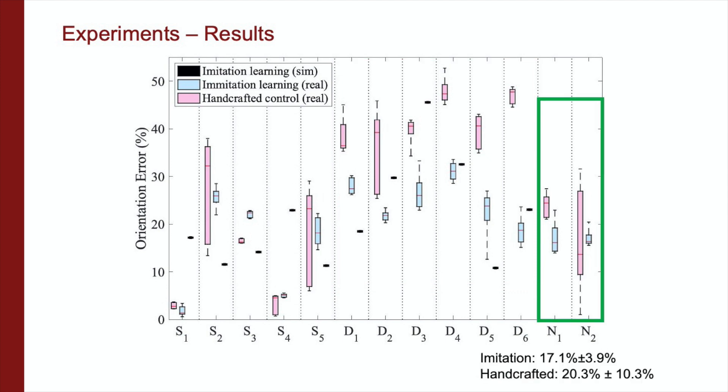Tests with the novel object demonstrate similar results to the simple transformation cases, with comparable percent average errors between two methods and the imitation learning method having significantly lower standard deviations.